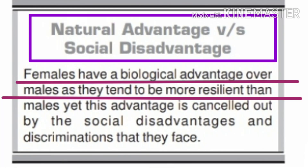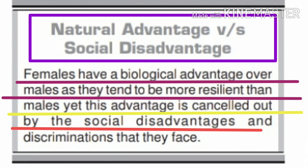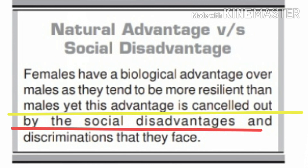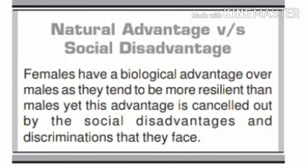Natural advantage versus social disadvantage. Females have a biological advantage over males as they tend to be more resilient than males. Yet this advantage is cancelled out by the social disadvantages and discrimination that they face. Nature made females strong enough to deal with shock, illness or any kind of change — this is a natural advantage. But this advantage is cancelled out by the social discrimination that females face in any society.